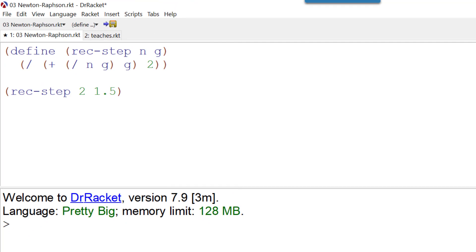So here we are with the rec-step that we originally had and we want to make sure that this works. So if I run it what I get is 1.4166666 and Scheme seems to be rounding down rather than rounding up so it's got a 5 at the end. But it's so far back it doesn't matter.